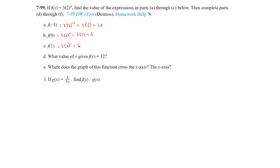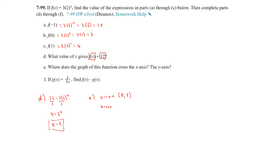For part D, what value of x gives F(x) = 12? Set up: 12 = 3 · 2^x. Divide both sides by 3: 4 = 2^x. Two raised to what power gives 4? That would be x = 2, since 2^2 = 4. Part E: where does the graph cross the x-axis and y-axis? This is an exponential function — it does not cross the x-axis because of the horizontal asymptote. It does cross the y-axis at x = 0, which we already found: the point (0, 3). There is no x-intercept because of the horizontal asymptote.